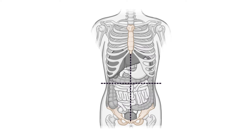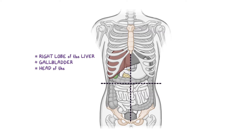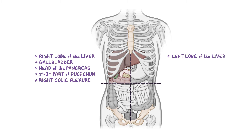Now that we understand how the quadrants are divided, let's see what abdominal organs are contained within each quadrant. Large organs located in the right upper quadrant are the right lobe of the liver, the gallbladder, the head of the pancreas, the first to third part of the duodenum, and the right colic flexure. Large organs located in the left upper quadrant are the left lobe of the liver, stomach, spleen, body of the pancreas, as well as the left colic flexure.